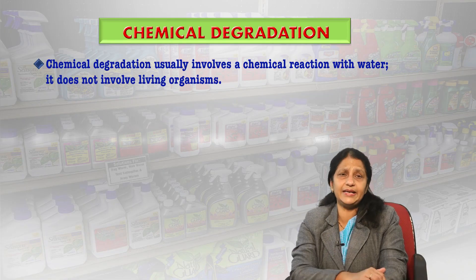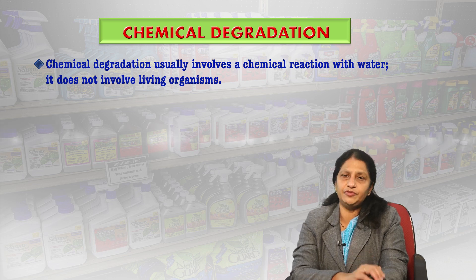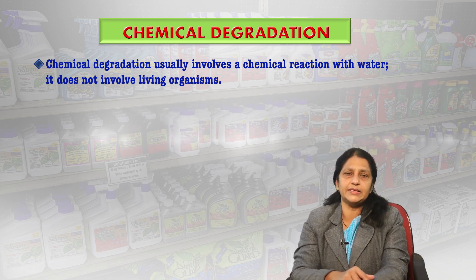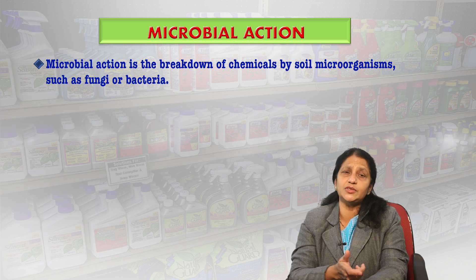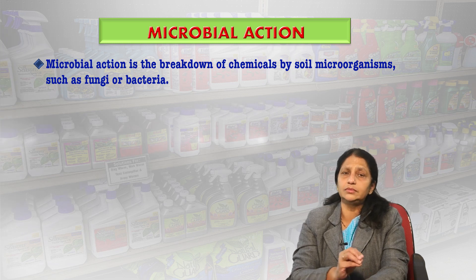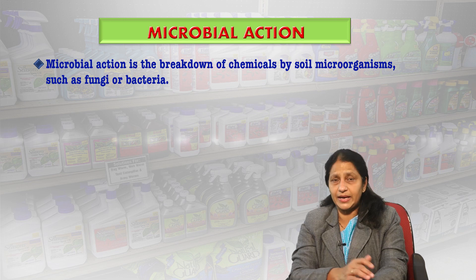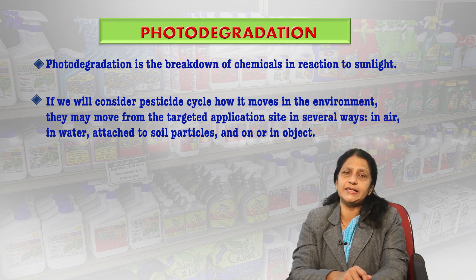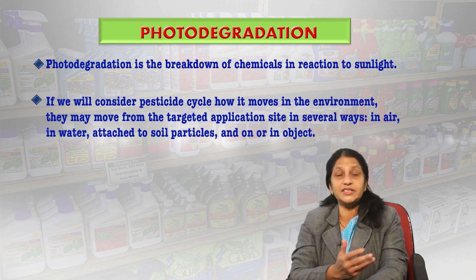There are many procedures available that break down pesticide compounds into simpler forms, usually to less toxic chemicals. Chemical degradation normally involves a chemical reaction with water and does not involve living organisms. Sometimes microbial action by soil microorganisms like fungi or bacteria also breaks down chemicals. Another process is photo-degradation, which breaks down chemicals in the presence of sunlight.